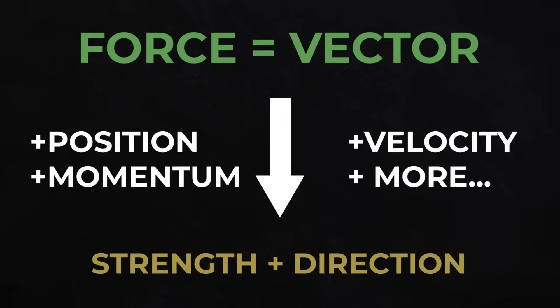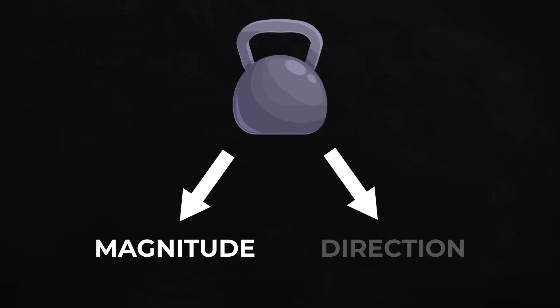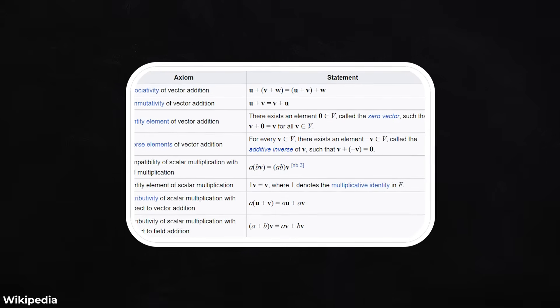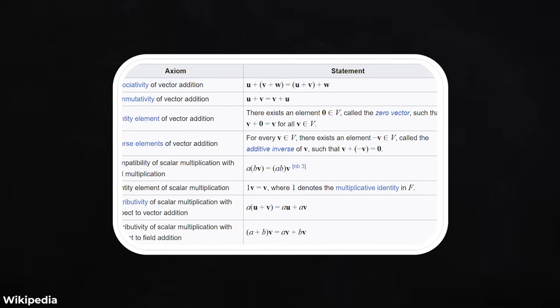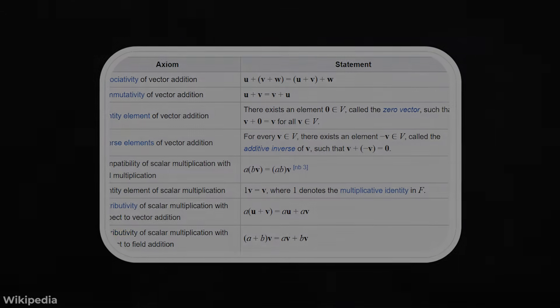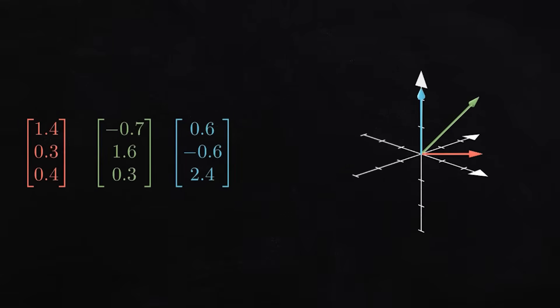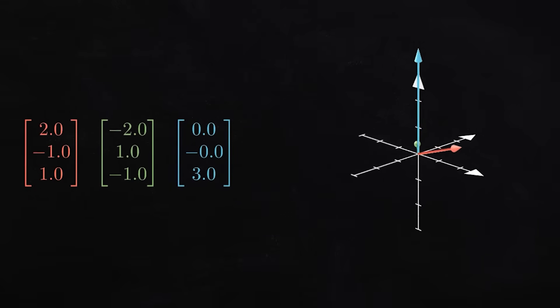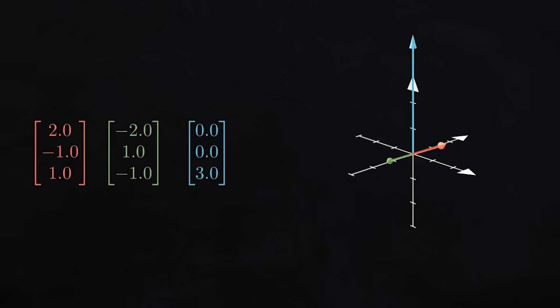That said, not everything is a vector. For example, mass is just a number. It has a magnitude but no direction. Numbers like this, which have magnitude but no associated direction with them, are known as scalars. Vector spaces are created by looking at families of vectors together. We can intuitively understand it as all of the space that we can get by adding together different combinations of vectors in some set.